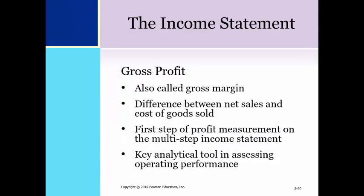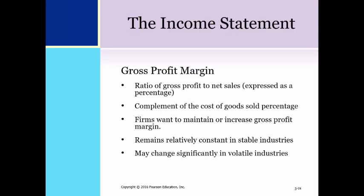The difference between net sales and cost of goods sold is called gross profit or gross margin. Gross profit is the first step of profit measurement on the multiple step income statement and is a key analytical tool in assessing a firm's operating performance. The gross profit figure indicates how much profit the firm is generating after deducting the cost of products or services sold. Gross profit expressed as a percentage of net sales is the gross profit margin. The gross profit margin and cost of goods sold percentage are complements of each other — the two percentages always add to 100%.